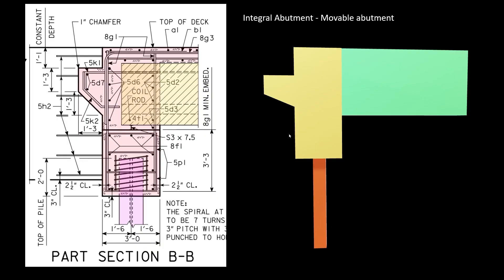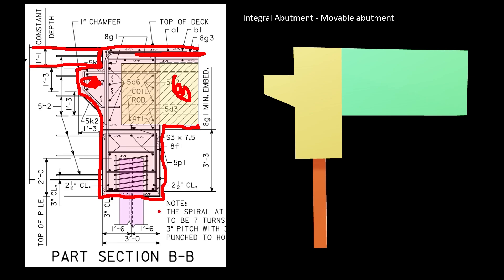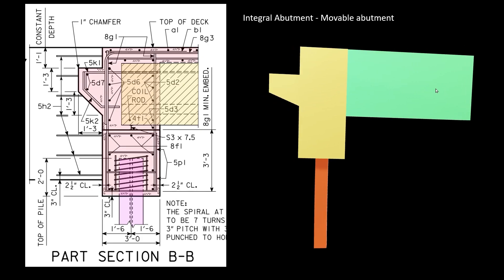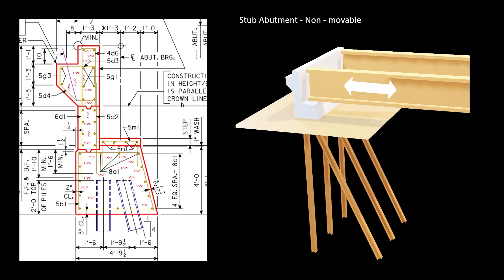Let's look at an integral abutment for a pre-stressed, pre-cast concrete bridge. The whole thing is cast together: here's the beam, here's the deck — the roadway people drive on. There's a paving notch that holds the approach pavement up, and a single vertical pile that allows it to move back and forth with temperature-driven expansion and contraction. Another kind of abutment is a stub abutment. You can see it has a battered pile, which means it's not going to move — it's meant to stay in place.